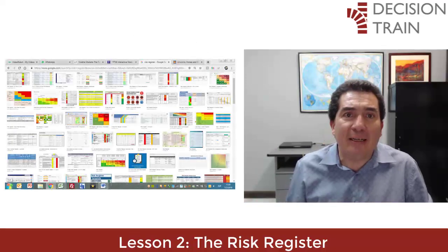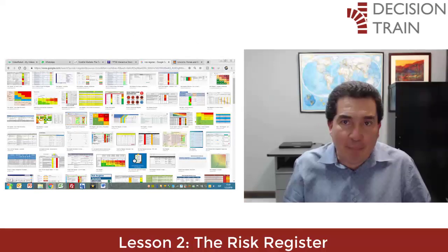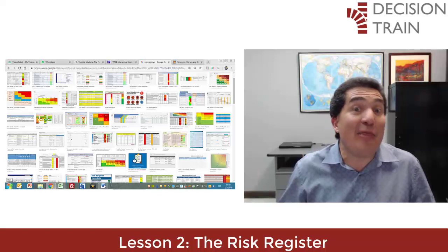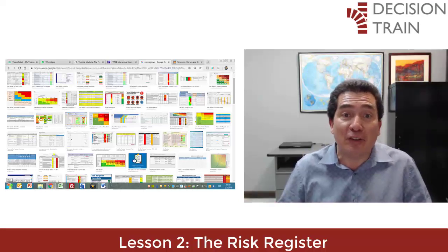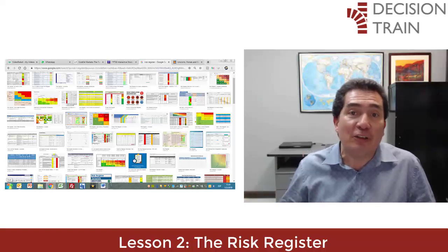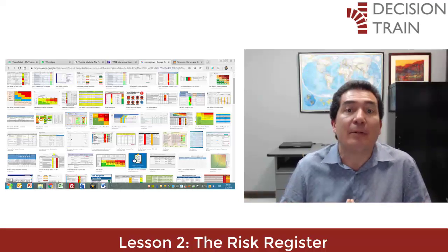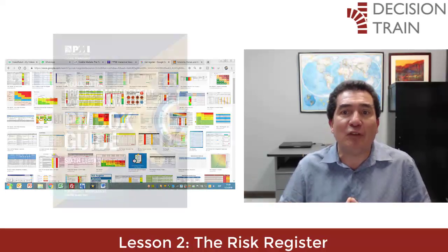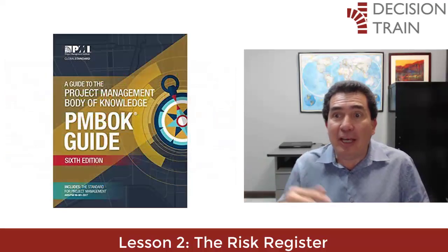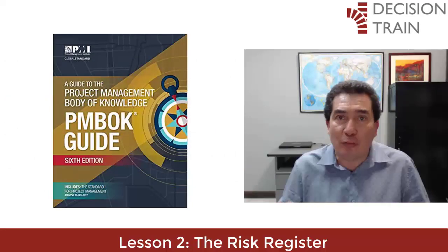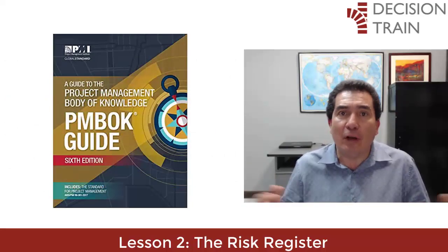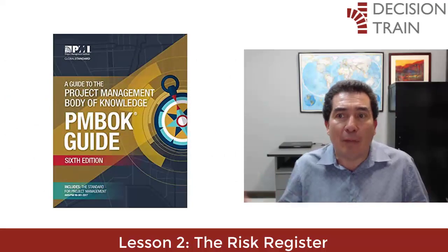By simply googling images for risk heat maps, risk matrices, or project risk maps, you will find thousands of colorful matrix representations of these ideas. A risk register can contain many different items. There are recommendations for the content of the risk register made by the Project Management Institute Body of Knowledge, the PMBOK.